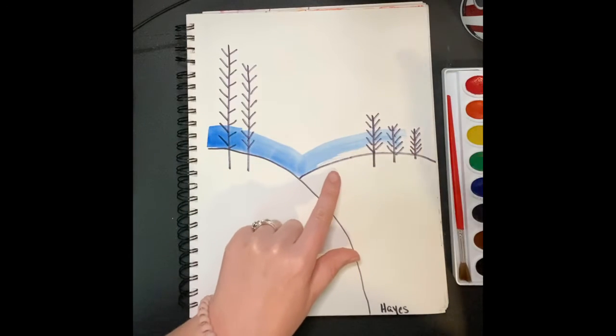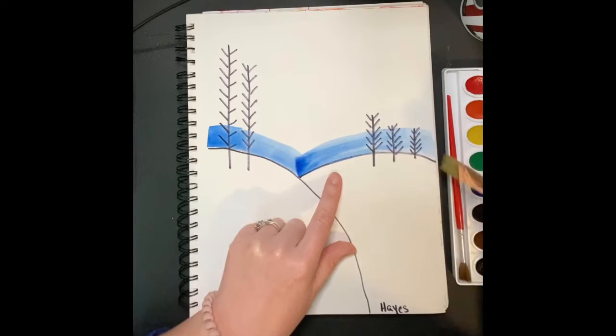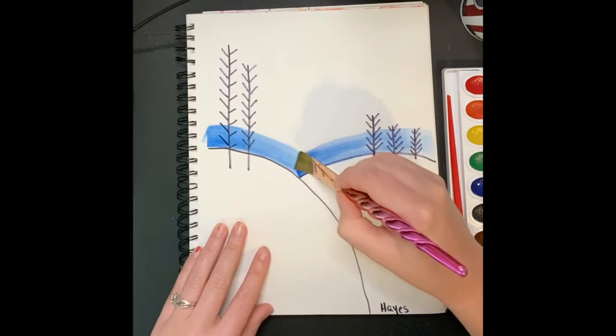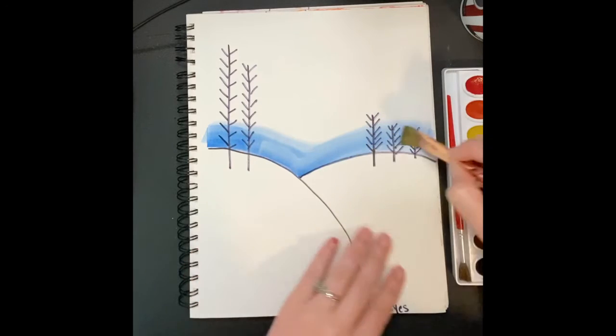If it's doing this it means you need more water. I'm not painting down here. I'm only painting the sky because down here is snow.